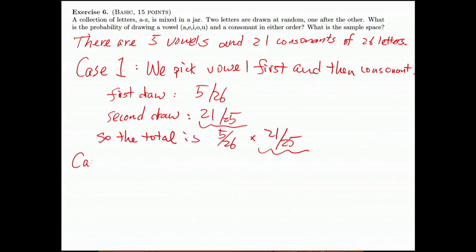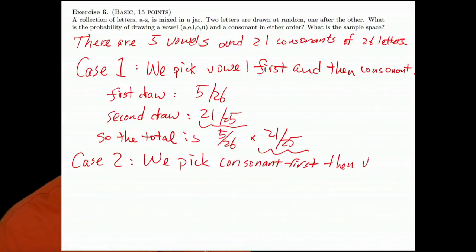And case two is the opposite. We pick the consonant first. So the first draw is 21 over 26, then vowel.